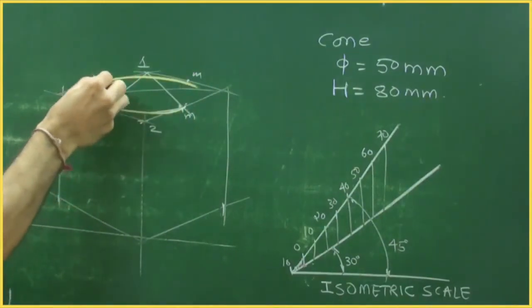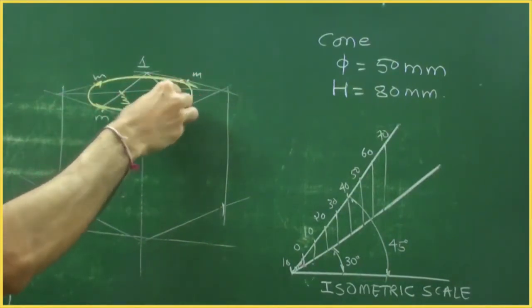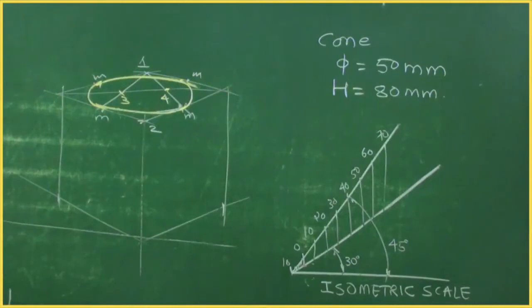This is 0.3. Now 3 to M. And this is 0.4. 4 to M you can draw curve. Now after this you find the center.